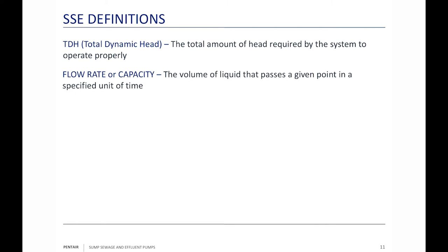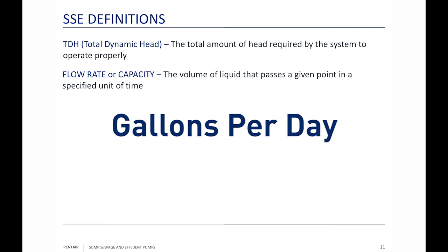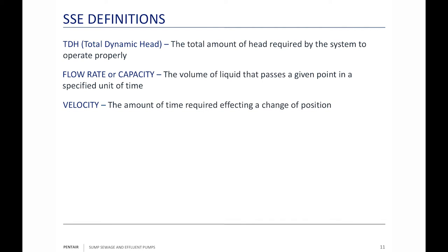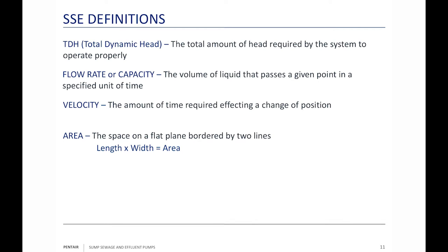Flow rate or capacity is the volume of liquid passing a given point in a specified amount of time — we use gallons per minute. In SSE we also use gallons per day because the inspector tells you how many gallons per day per square foot you can put into the leach field, which helps size it. Velocity is the speed of the water moving through the piping system. Area is a space on a flat plane — for a leach field it's length times width; for a pipe it's pi r squared, or since we talk in diameters, ID squared times pi divided by four.